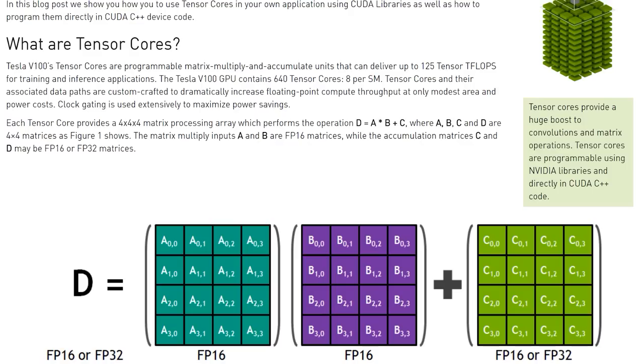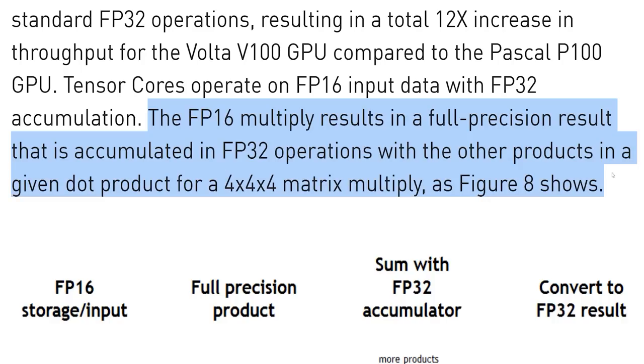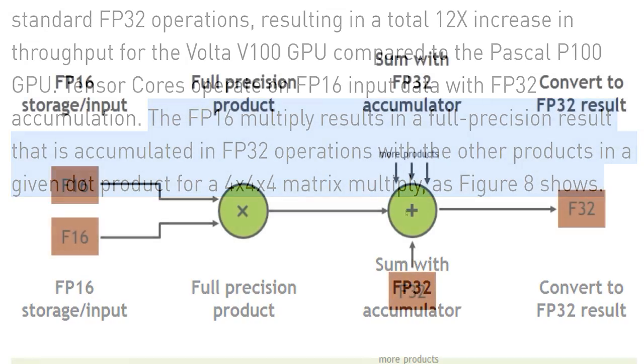Tensor cores can handle 64 floating point mixed precision operations per second — mixed precision in reference to the mix of FP16 and FP32 units in the formula mentioned earlier. The FP16 multiply yields a full precision result that is accumulated in FP32 operations, with the other products in a given dot product for a 4x4x4 matrix multiply. In a nutshell, tensor cores are designed for specific operations at the expense of precision. CUDA cores are still technically more efficient in their current state for many operations.